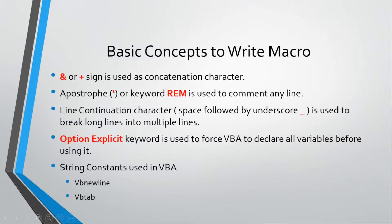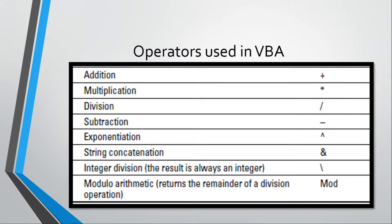When we are writing macros, the ampersand or plus sign is used as a concatenation character. The apostrophe sign or Rem keyword, which I mentioned, is used to comment inline. Line continuation character — space followed by underscore — is used to break long lines into multiple lines, but there is no impact on the output. Option Explicit keyword is to force VBA to declare all the variables before using it. We have already used some string constants: vbNewLine and vbTab. There are other different string constants, but vbNewLine is mostly used. Then these are the operators which we are going to use.